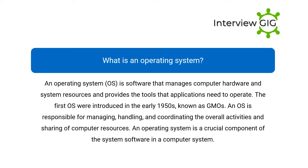What is an operating system? An operating system (OS) is software that manages computer hardware and system resources and provides the tools that applications need to operate. An OS is responsible for managing, handling, and coordinating the overall activities and sharing of computer resources. An operating system is a crucial component of the system software in a computer system.